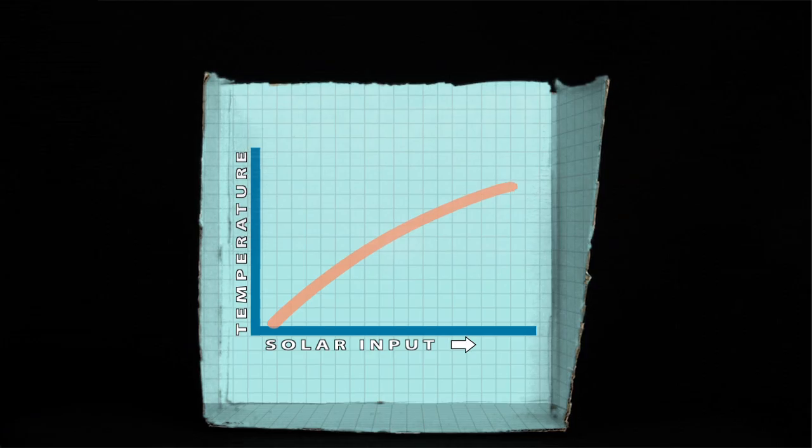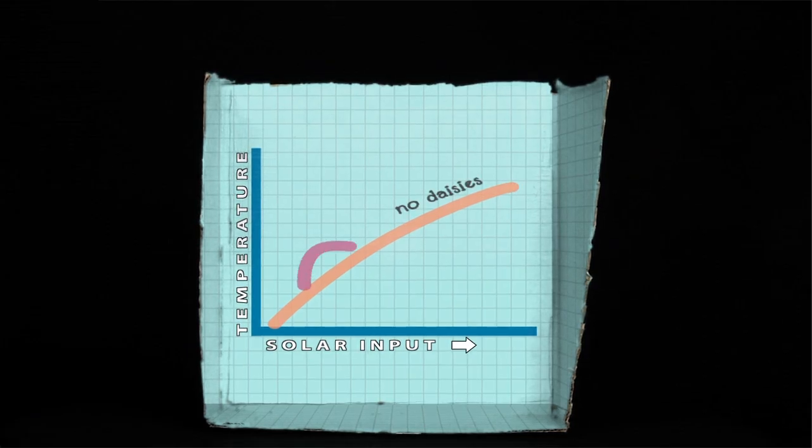And over time, within a narrowly defined temperature range, Daisy world stays resilient and makes it possible for daisies to exist at all.